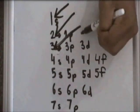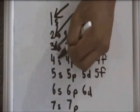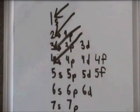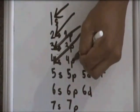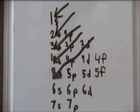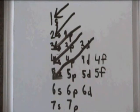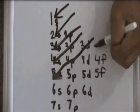Then you have to go through 3P and 4S, then 3D, 4P and 5S, then 4D, 5D.